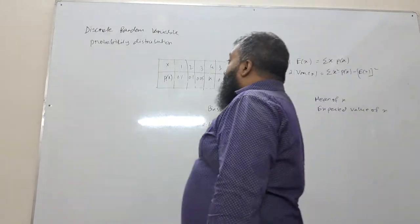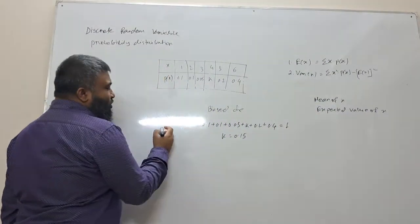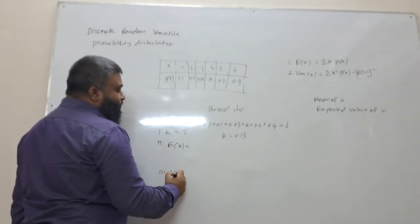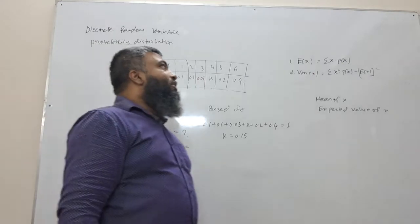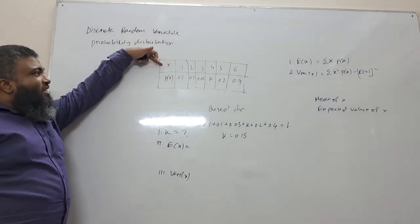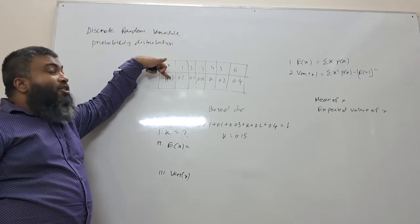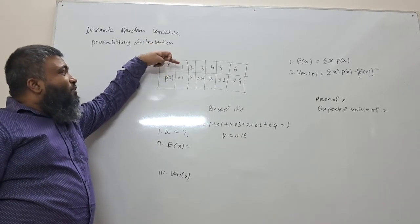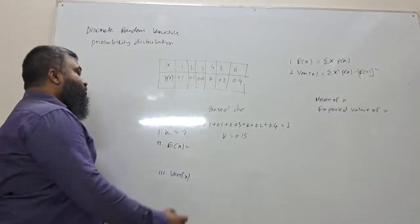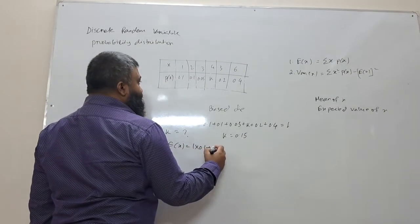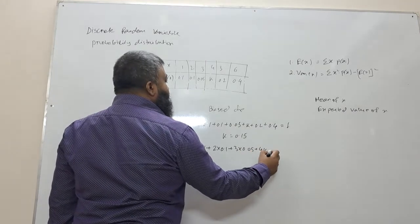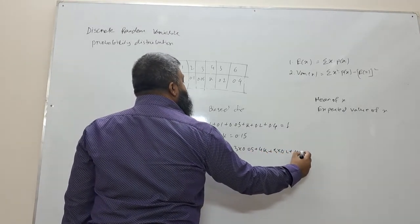The questions are: first, find K value; second, find E(x); third, find variance of x. E(x) equals summation x into P(x), where x is a random variable and P(x) is probability of x. So E(x) equals 1 into 0.1 plus 2 into 0.1 plus 3 into 0.05 plus 4 into K plus 5 into 0.2 plus 6 into 0.4.